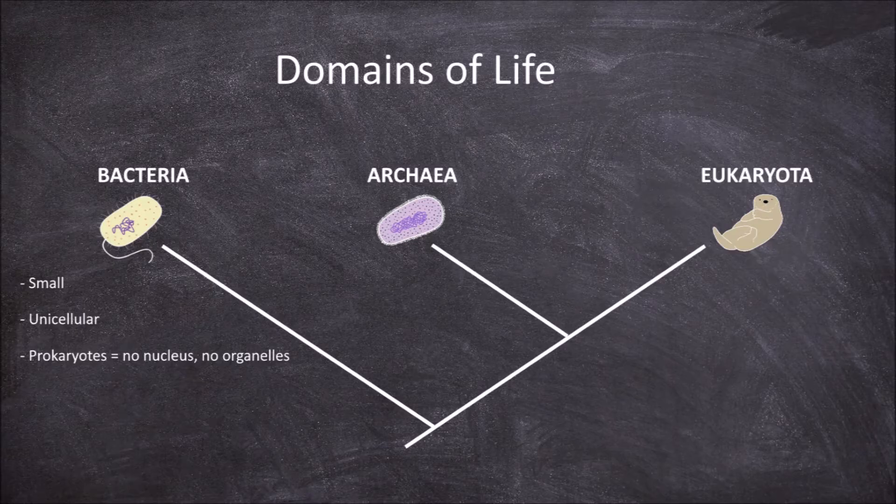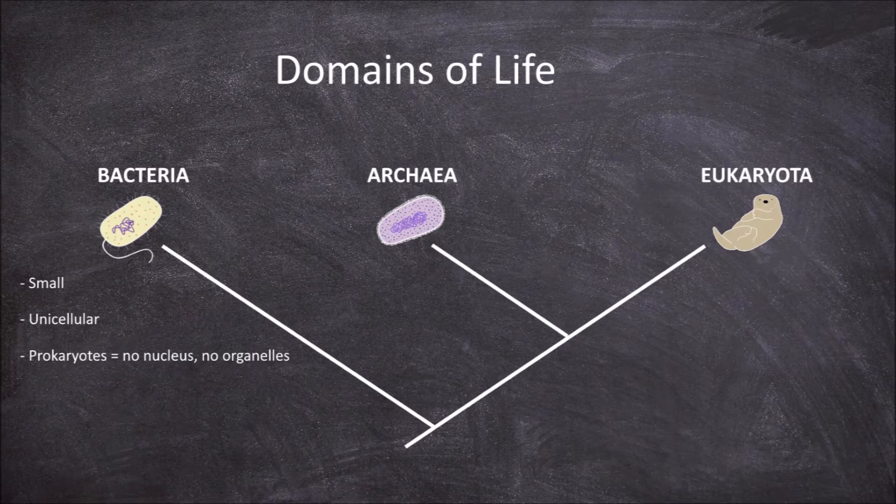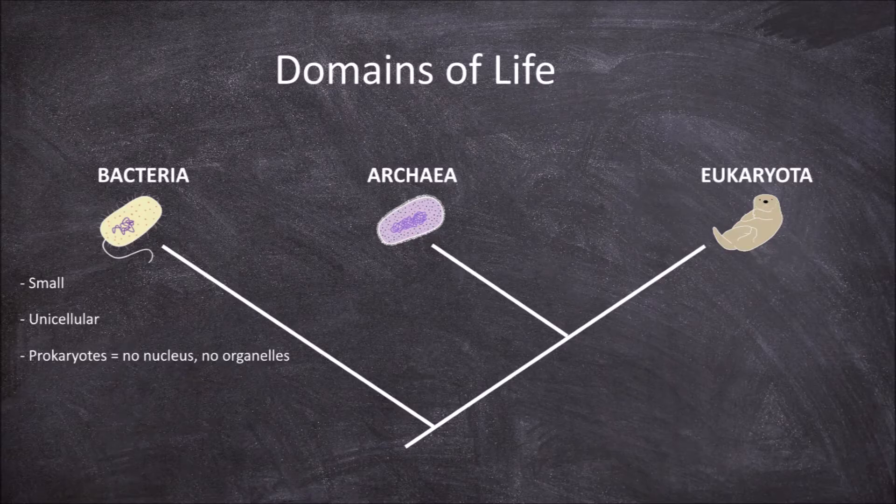The main differentiating feature of the bacteria, separating it from the other two domains, is that they have a cell wall made of peptidoglycan.